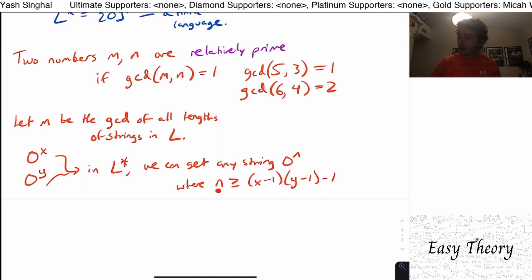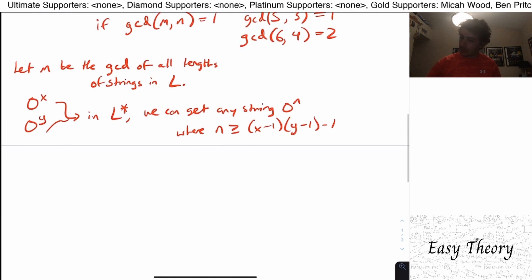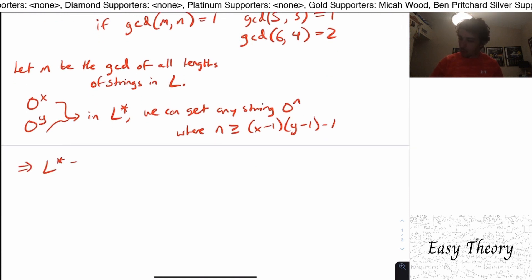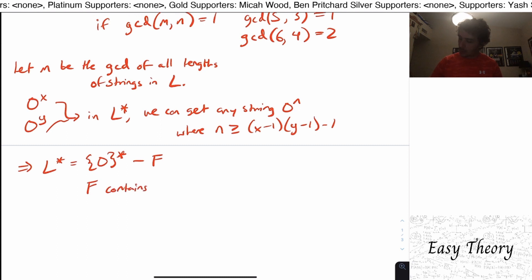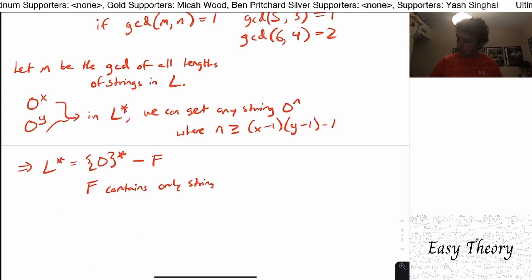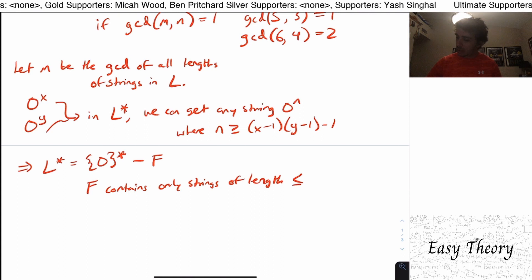So then this implies that L star will be equal to zero star minus language F, where F contains only strings of length less than or equal to N. So that's pretty nice.